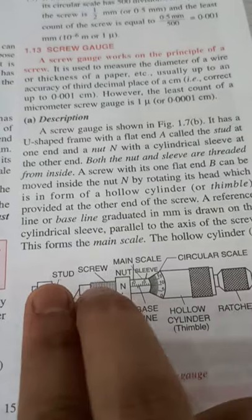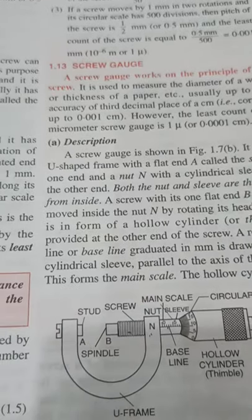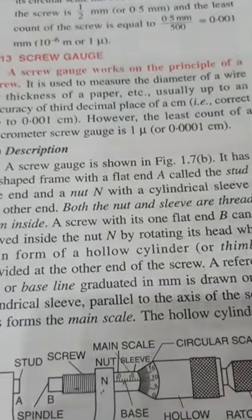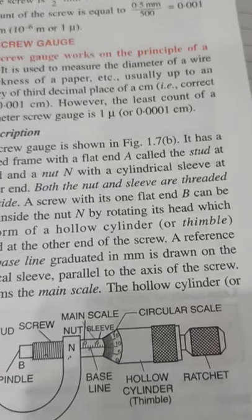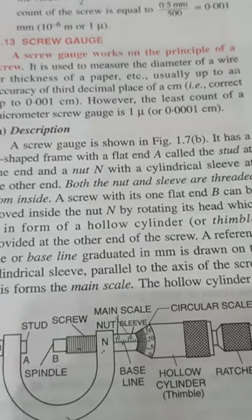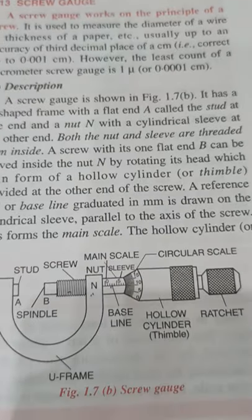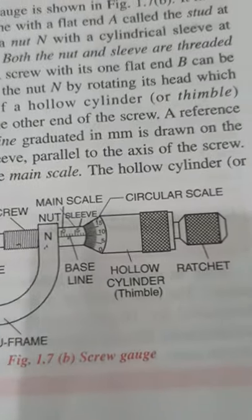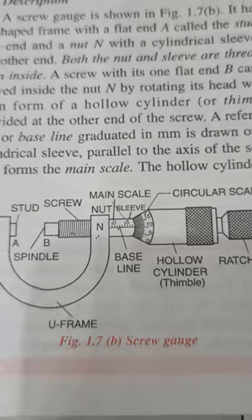When you place the object between A and B, you should hold it very softly using the ratchet. When you rotate the ratchet and hear a click sound, you must stop rotating. If you continue rotating, the screw inside the ratchet will be damaged and its uniformity will be destroyed, causing inaccurate readings in the future. So the main function of the ratchet is to hold the object between A and B softly, avoiding overtightening.